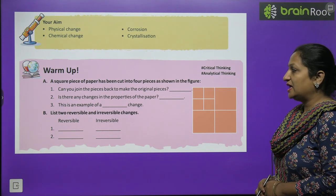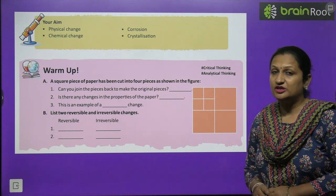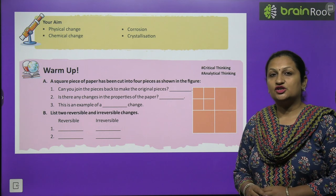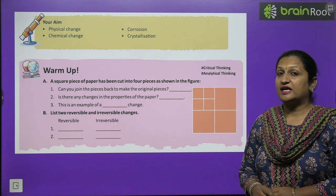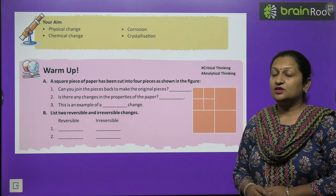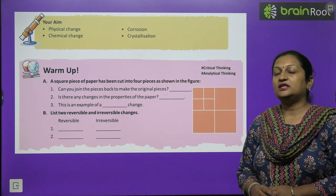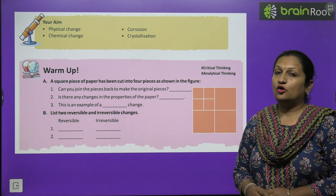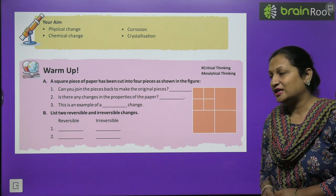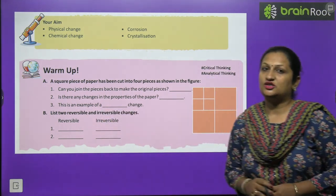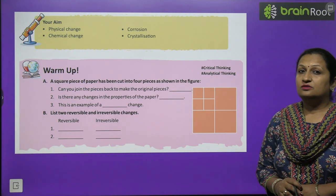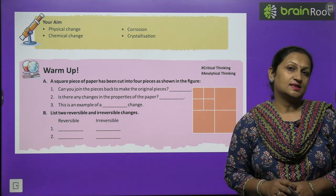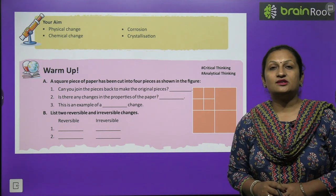List two reversible and two irreversible changes. Reversible change means a change that we can undo. For example, stretching a rubber band - its shape and size change, but when released it regains its original shape. Similarly, ice melts into water, and water can be frozen back into ice. These are reversible changes. Irreversible changes include turning milk into curd and drying of leaves - these cannot be reversed.